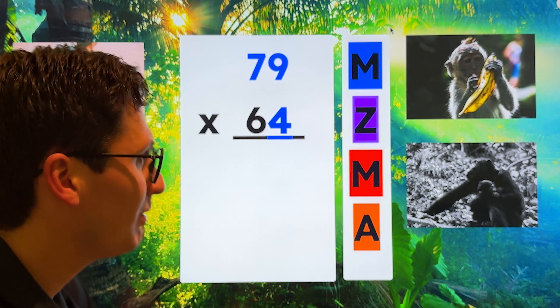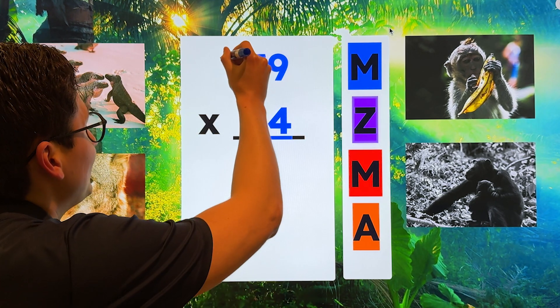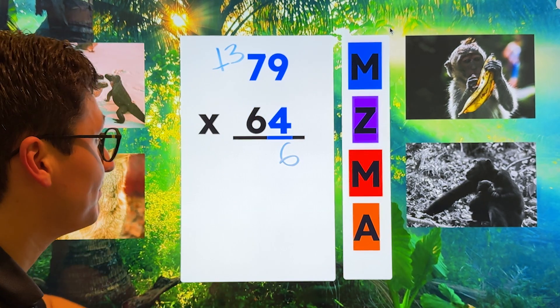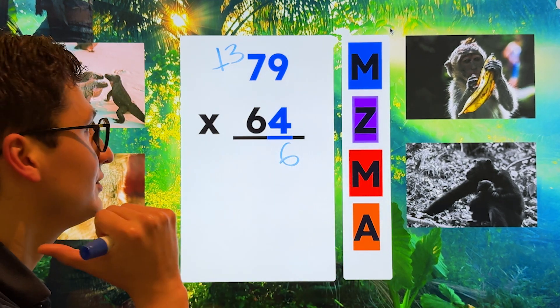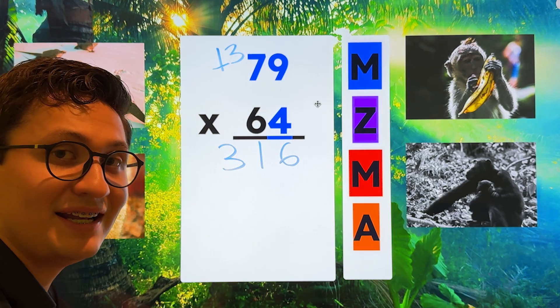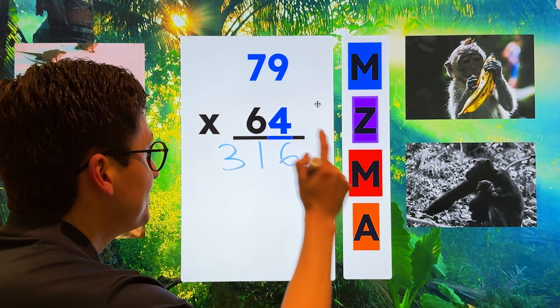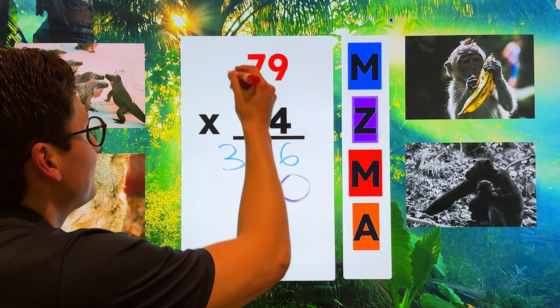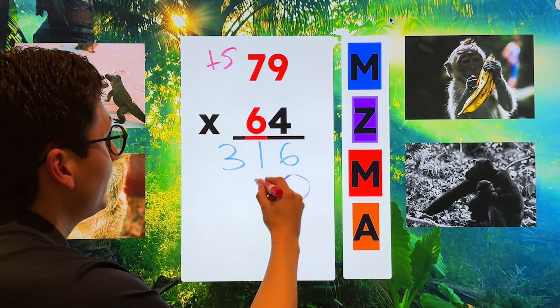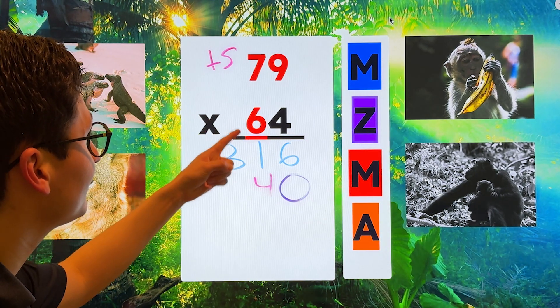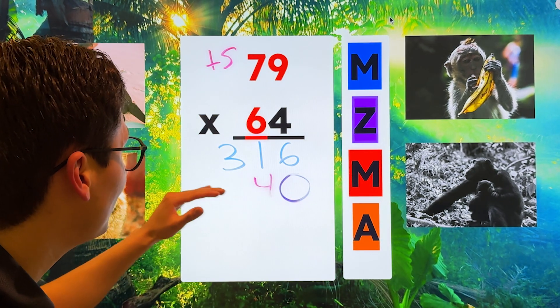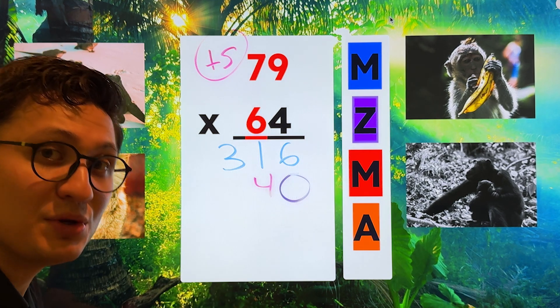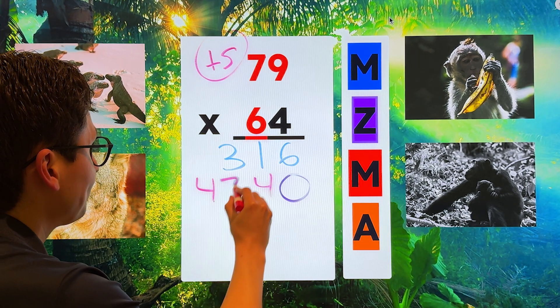So step one is multiply. Four times nine is 36. We must make sure we regroup that three. Super important. Four times seven is 28, 29, 30, 31. Excellent. Next, we erase the plus three. Step two is zero. All you do is add a zero. For step three, we have to multiply. Six times nine is 54. We make sure that we regroup. Why? Because when I multiply six times seven, I get 42. If I just put 42 here, it'll be wrong. I have to add this plus five. Six times seven is 42 plus five is 47.